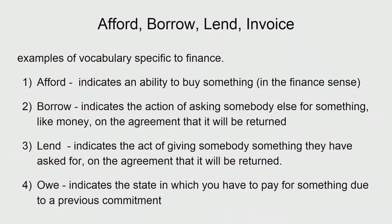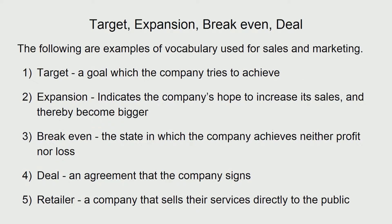To afford something is to indicate an ability to buy something. To borrow indicates the action of asking somebody else for something, like money. To lend indicates the act of giving somebody something they have asked for. To owe indicates the state in which you have to pay for something due to a previous commitment. These are the kinds of words you need to know. Now look at sales and marketing types of expressions.